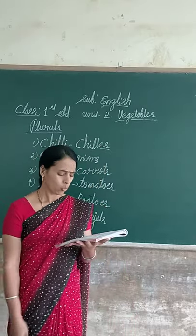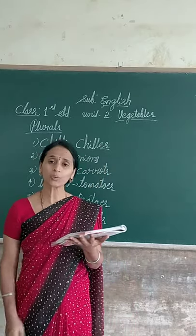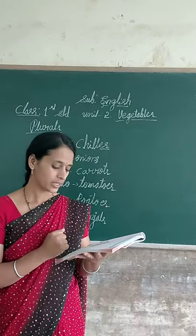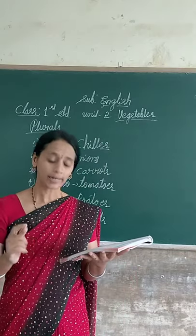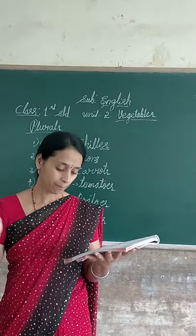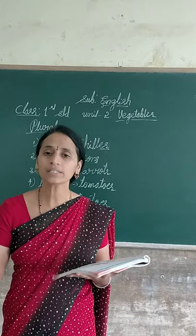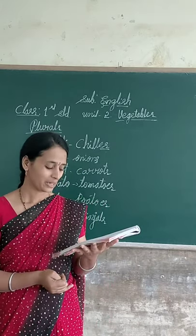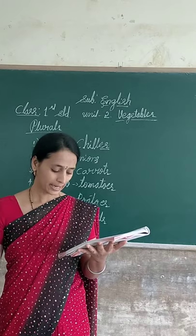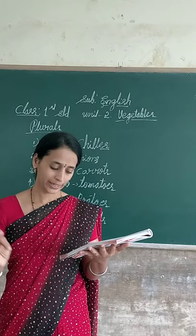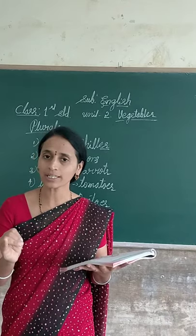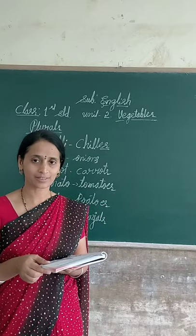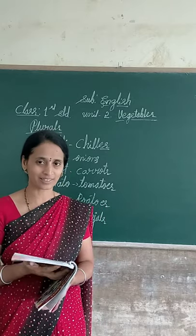Seeta tells us: we grow radish, beans, brinjal, and chilli. Repeat — we grow radish, beans, brinjal, and chilli. Yes, you have to talk with your friends like this. How nice is this sentence?